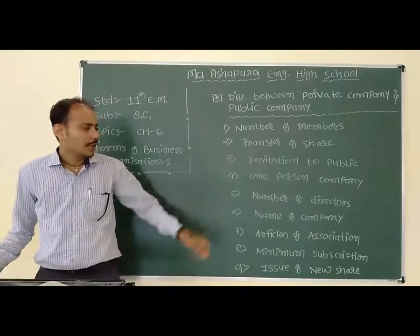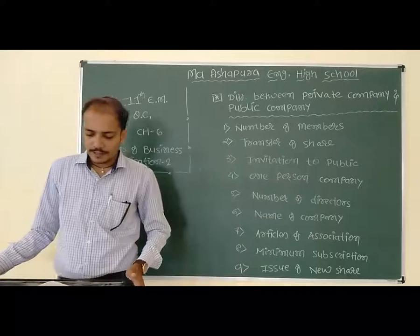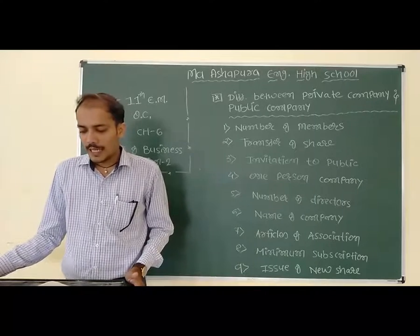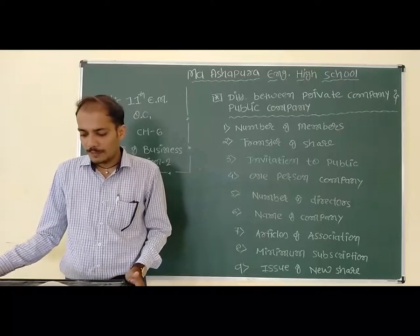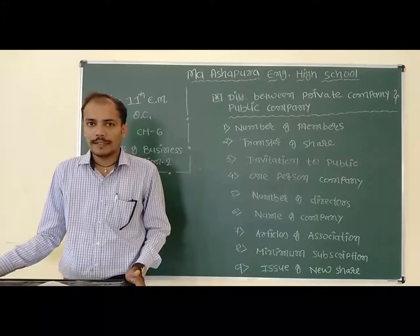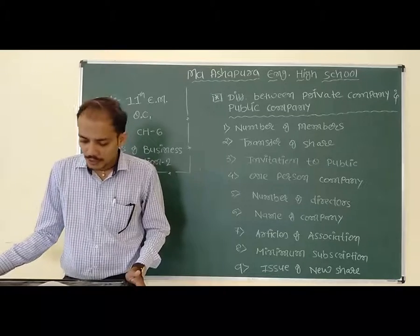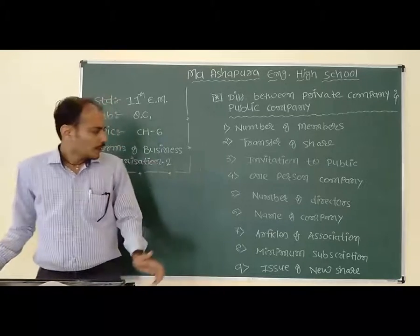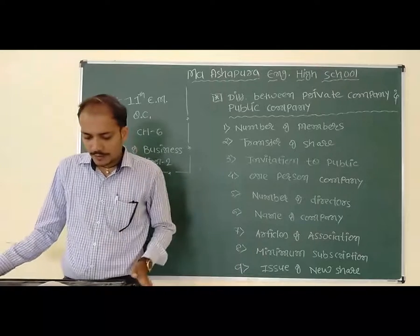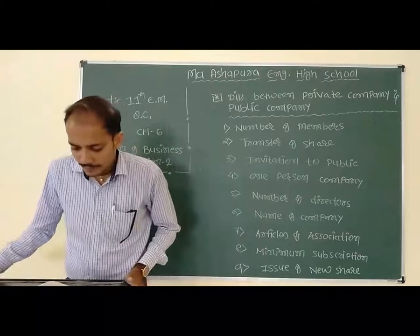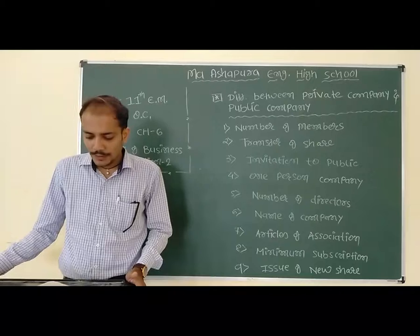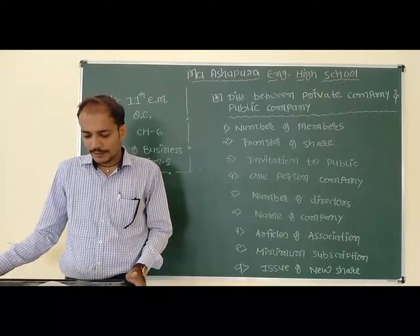Point number 5: number of directors. Point number 6: name of the company. Private company ke naam ke last mein 'Private Limited' word add kiya jata hai.